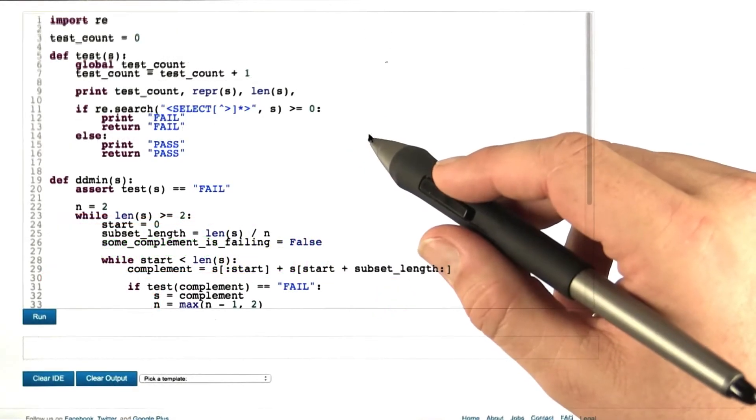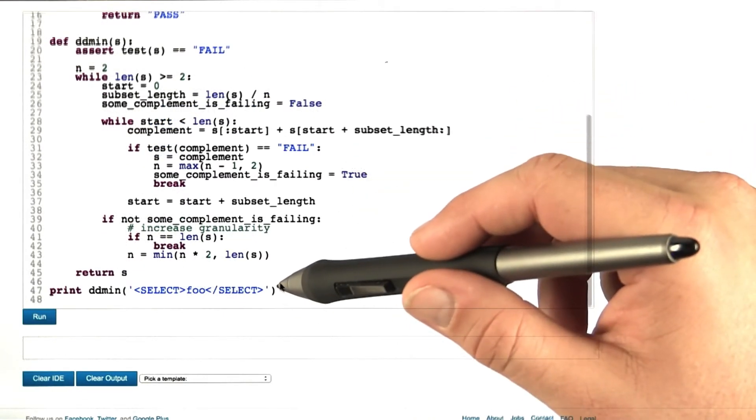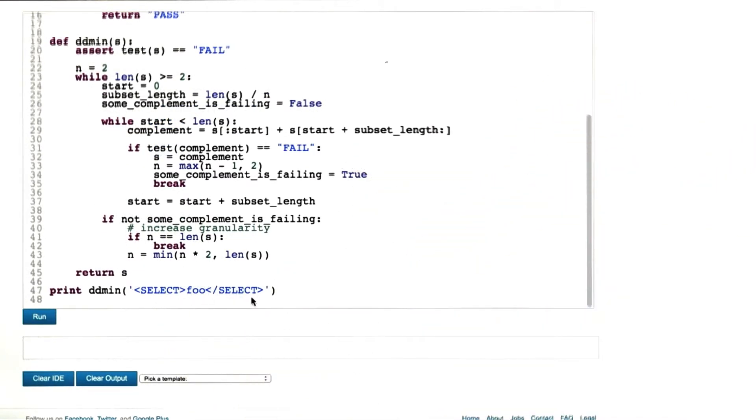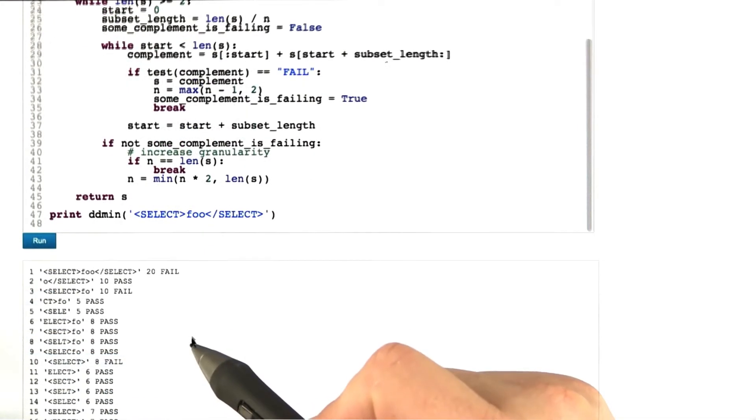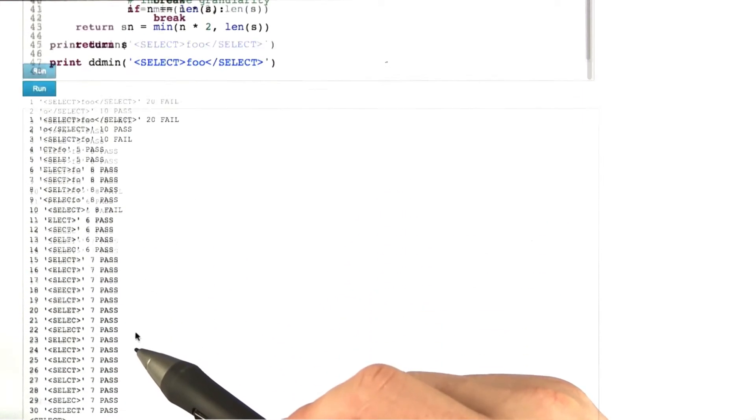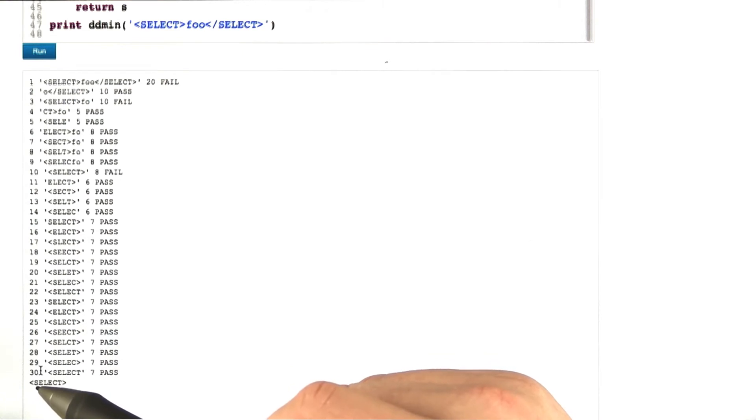Let me illustrate this with our example. Here again we have delta debugging as is, and we're applying it on this very input, as we just saw. When I press on run, we can now see the individual runs, and in the end,